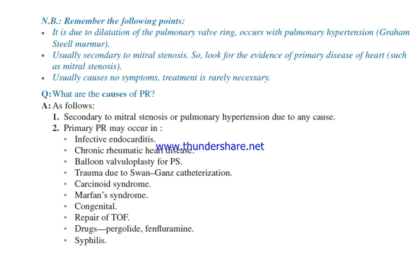What are the causes of pulmonary regurgitation? Secondary to mitral stenosis or pulmonary hypertension due to any cause. Primary pulmonary regurgitation may occur in infective endocarditis, chronic rheumatic heart disease, balloon valvuloplasty for pulmonary stenosis, trauma due to Swan-Ganz catheterization, carcinoid syndrome, Marfan syndrome, congenital repair of tetralogy of Fallot, drugs such as pergolide and fenfluramine, and syphilis.